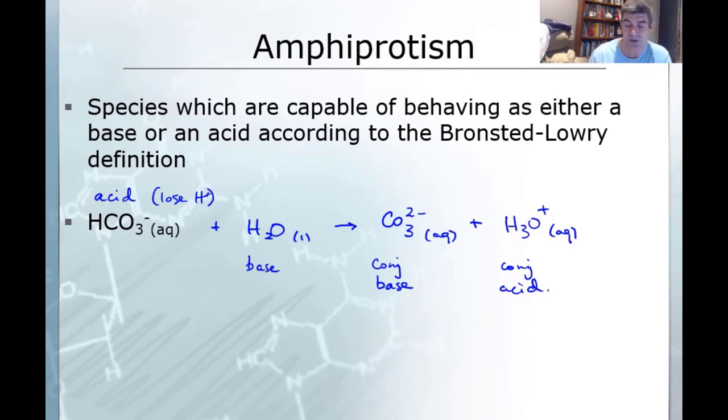So this is just an example of a Bronsted-Lowry acid. But what about if we take exactly the same two reactants? This time we switch them around so that the bicarbonate ion is acting as a base. Let me just write base underneath here, which means that this time the water is acting as an acid.